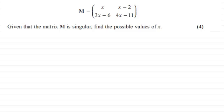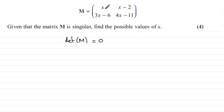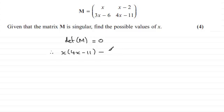Welcome back. If a matrix is to be singular, that means that the determinant — det of matrix M — must equal zero. How do we work out a determinant for a matrix? We multiply the leading diagonal elements together and always subtract the product of the trailing diagonal elements. So what we've got here is x times (4x minus 11), and then we subtract the product of the trailing diagonal: (3x minus 6) multiplied by (x minus 2), and that must equal zero.